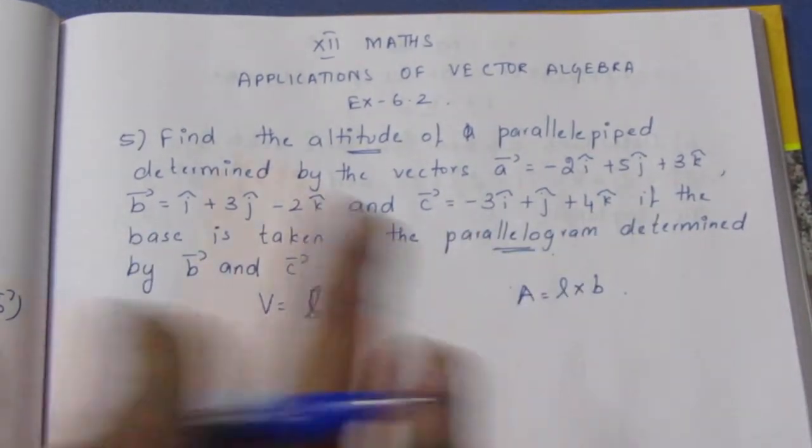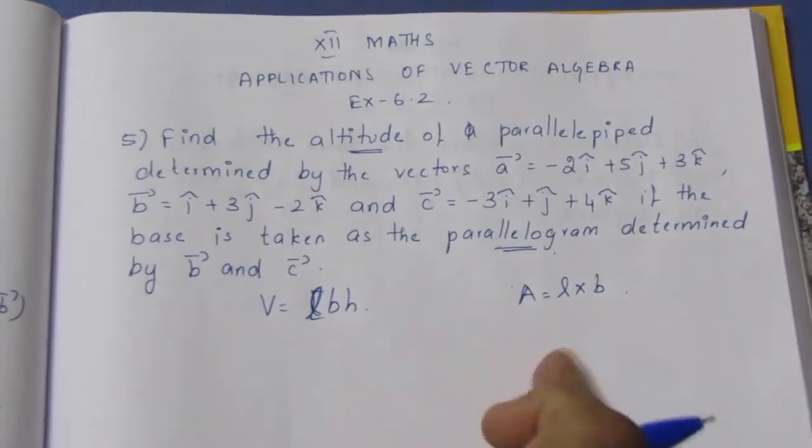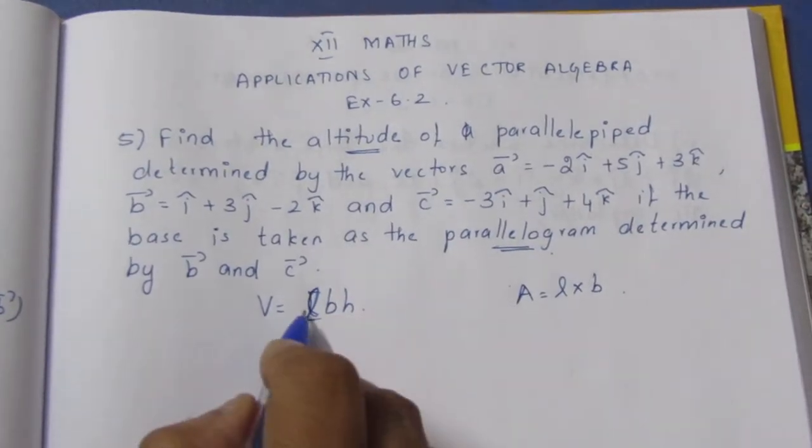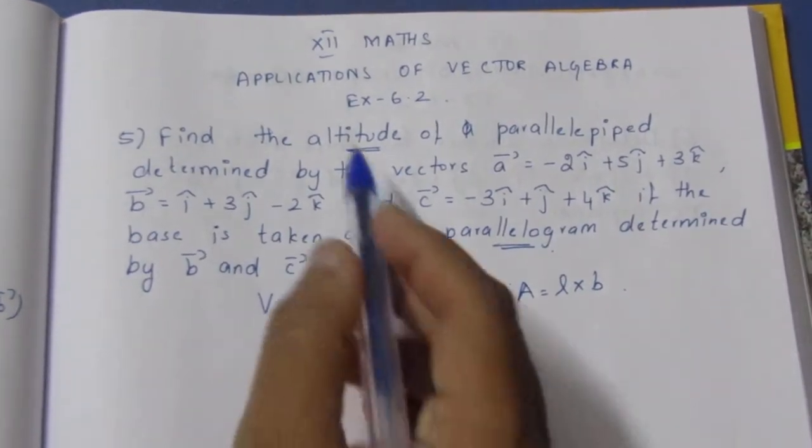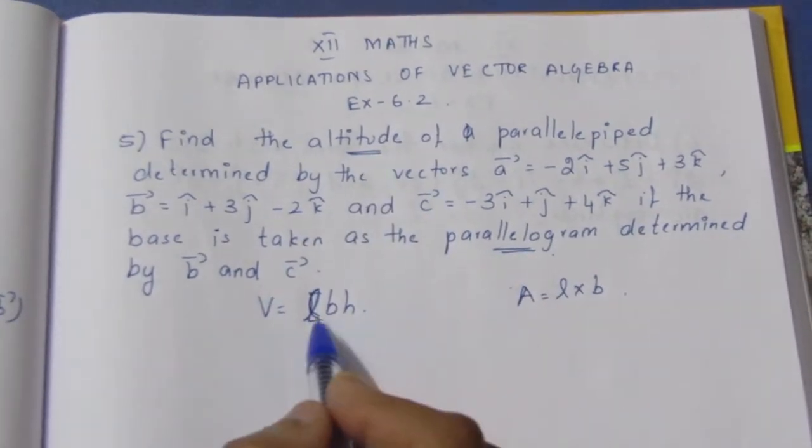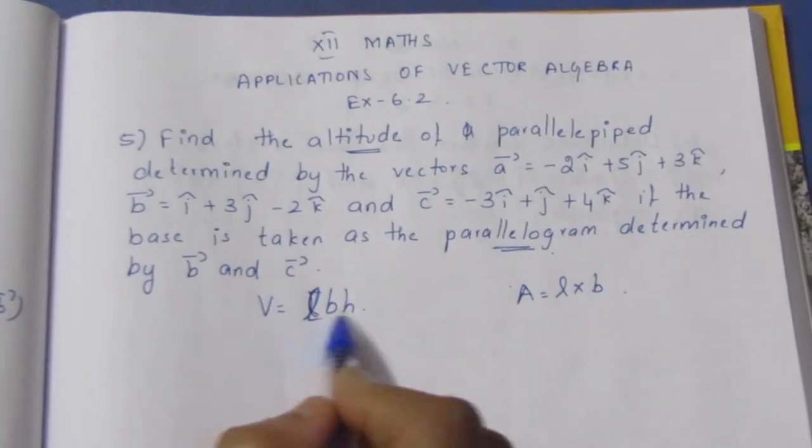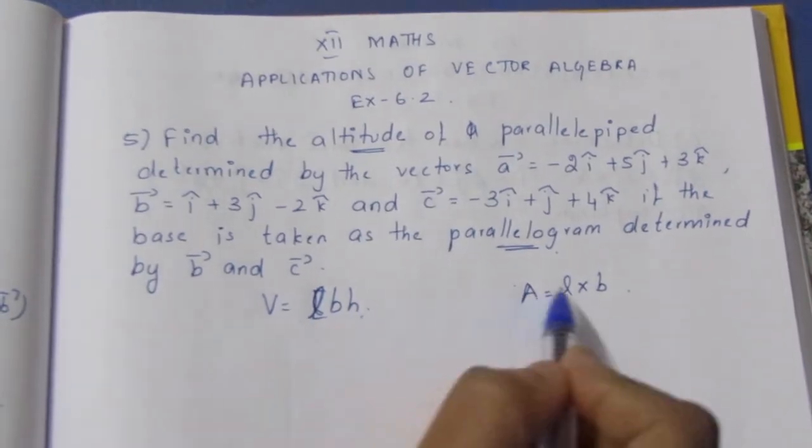Area is L into B. If we divide volume by area, we get LBH by LB. When we cancel, we get H, the height.